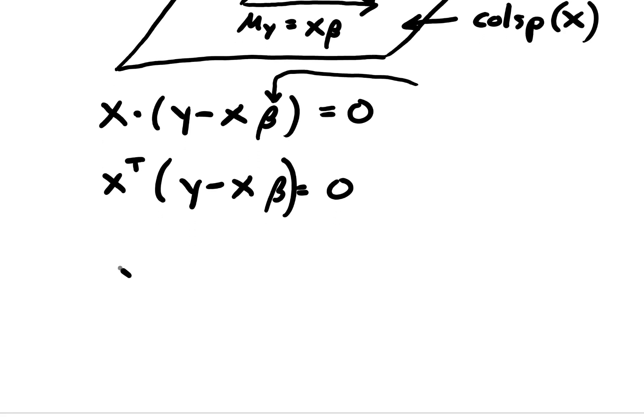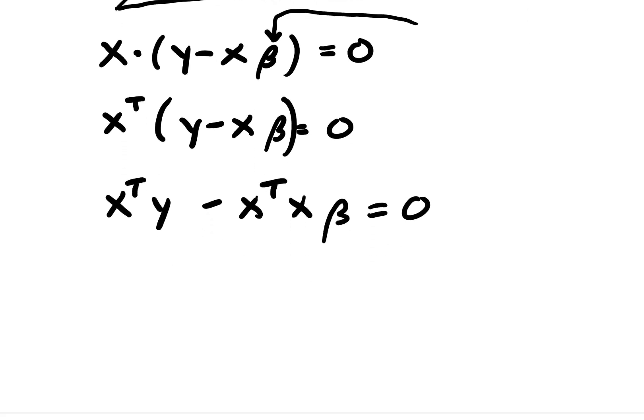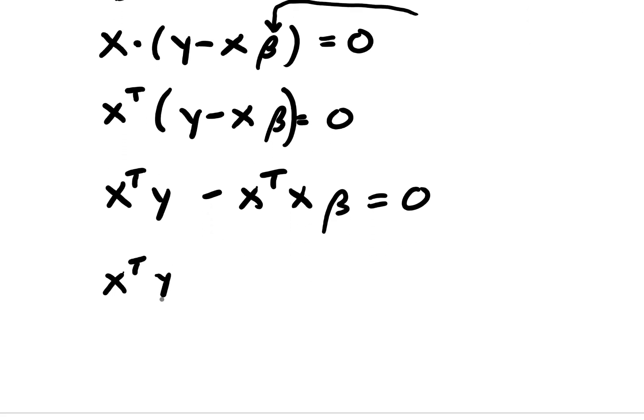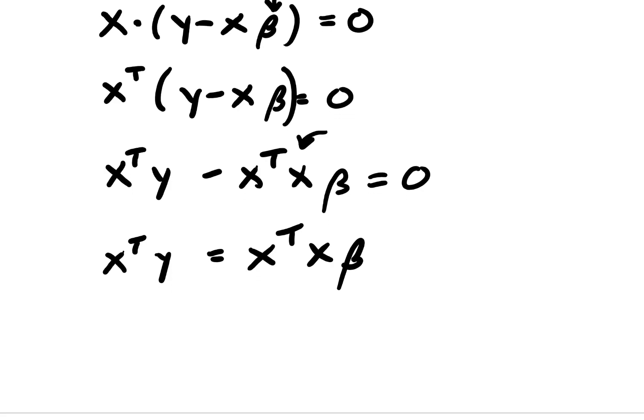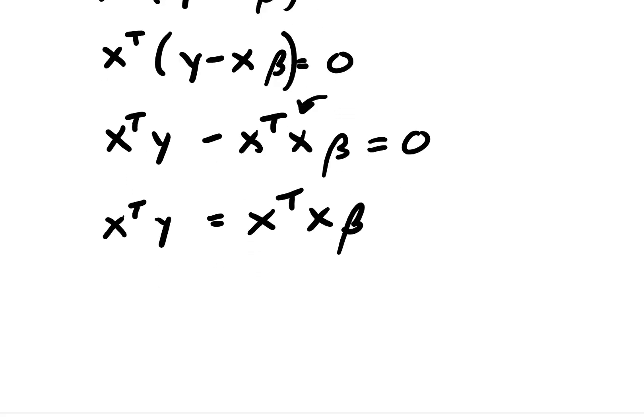And then x transpose y minus x transpose x beta is equal to zero. And then x transpose y is equal to x transpose x beta. So I just added this term to the other side. And then all we need to do at this point to solve for beta is take the inverse of x transpose x on both sides. So if we do that, then beta is equal to x transpose x inverse x transpose y. So this is the normal equation.